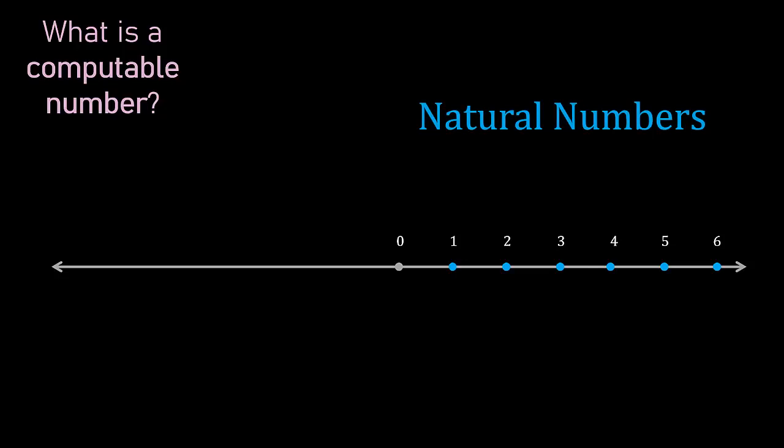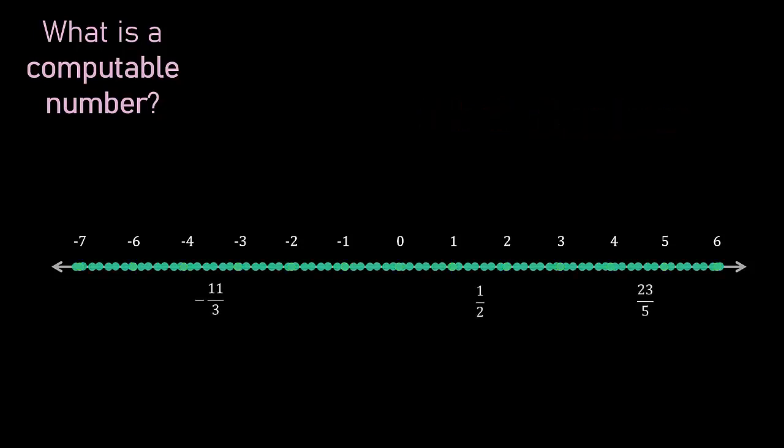Afterwards comes the necessity of negative numbers. So we place them as well, and the result are the whole numbers. We continue by adding fractions, and now we have the rational numbers. But our number line is not complete, since there are many numbers that cannot be expressed as fractions.